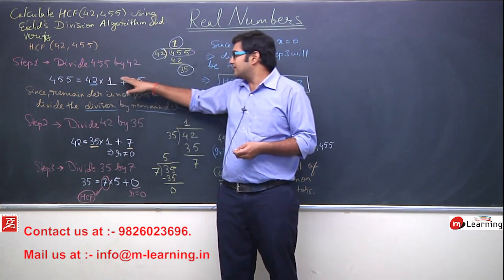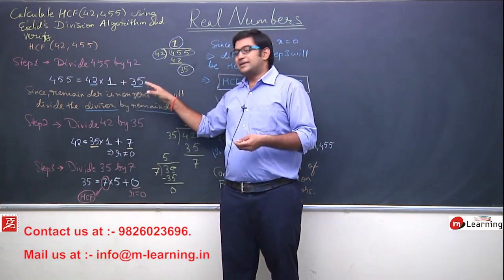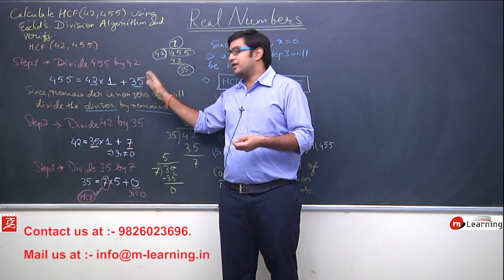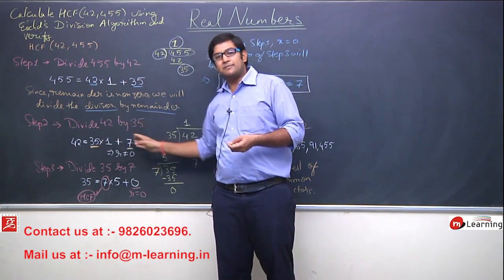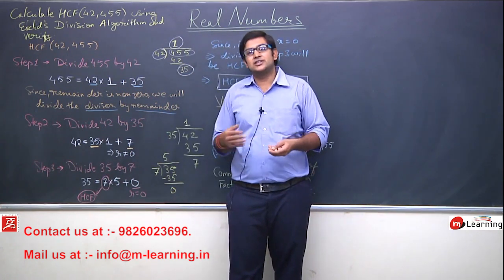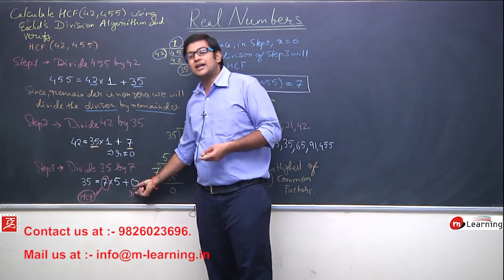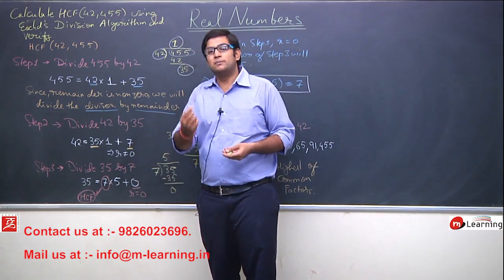Ab dekhiye, har bar hum remainder kya kar raha hai, har bar hum remainder ko kam karte ja raha hai. Aap dekh rahe hai ki jo pichle case me remainder tha, waha ab divisor ban gaya, phir jo yaha pe remainder tha, waha ab divisor ban gaya, aur ye algorithm continuously continuously chalta jae ga, aur har bar aisa hooga ki ek na ek step pe aake remainder finally zero bach jae ga.